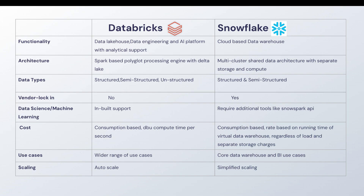When we talk about architecture, Databricks has a typical Spark-based polyglot processing engine with Delta Lake. It is based on Spark and you can work in Databricks using SQL, R, Scala, and Python, and it has the concept of Delta Lake. Snowflake, on the other hand, uses a multi-clustered shared data architecture with separate storage and compute. I have videos on both in my Databricks and Snowflake series if you want to learn more.